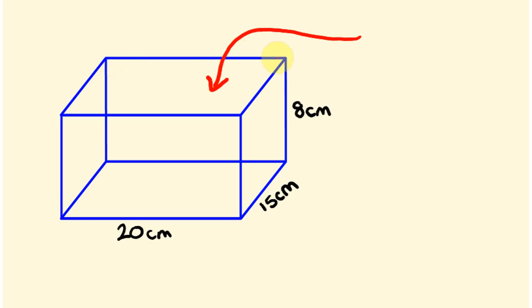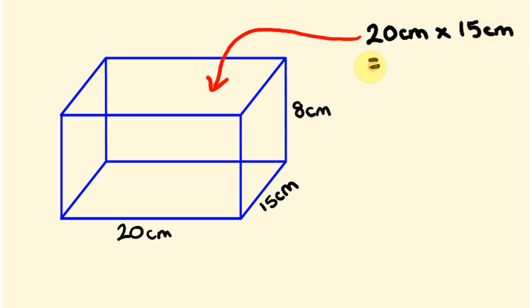We have a length here which is 20 centimeters, and we have a width of this particular rectangle which is 15 centimeters. Because the area is length times width, we multiply these together. So 20 times 15 is 300 centimeters squared.